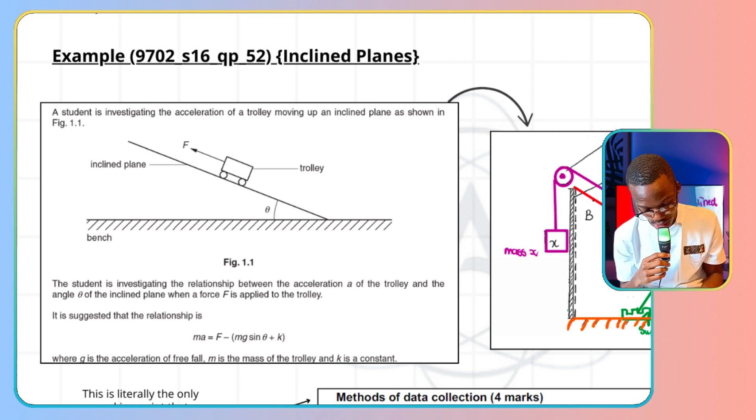We're given a student that investigates the acceleration A of a trolley moving up an inclined plane. So the student investigates the relationship between the acceleration and the angle theta. It is suggested that the relationship is given by that equation, where G is the acceleration of free fall, and M is the mass of the trolley. By looking at that equation, I'm thinking to myself, I'm seeing F. So I'm asking myself, if I'm drawing a diagram, how can I show how F is acting? I'm seeing an inclined plane. Practically, you can't just have a plane suspended in the air. That doesn't make sense to me.